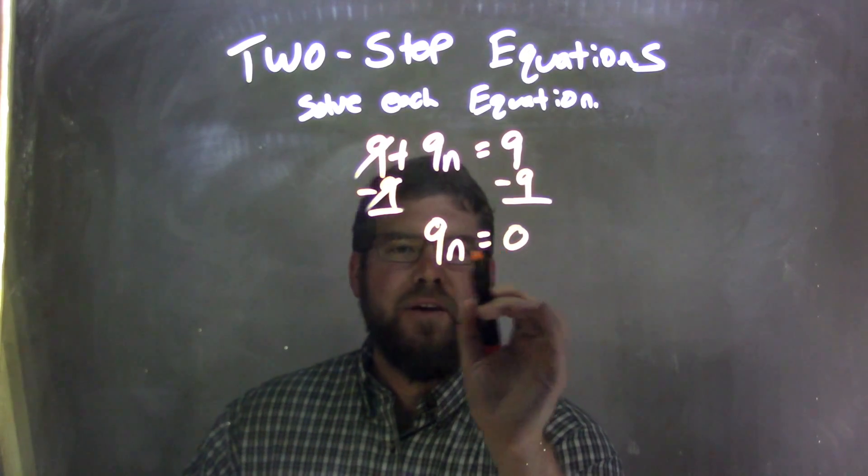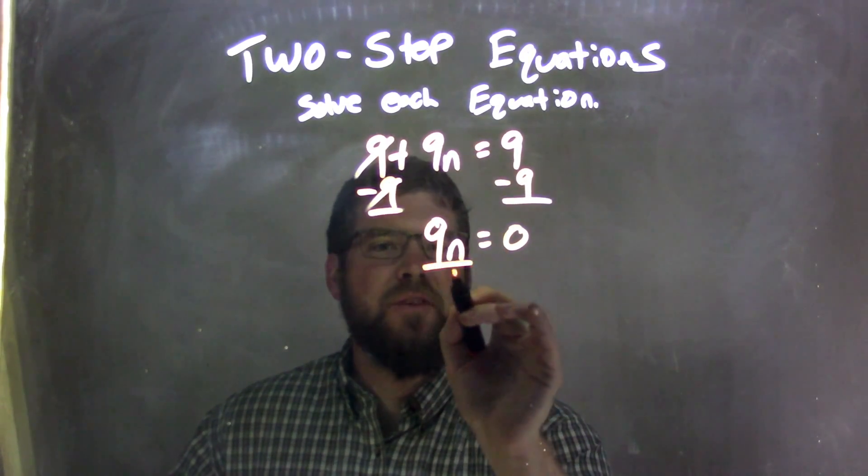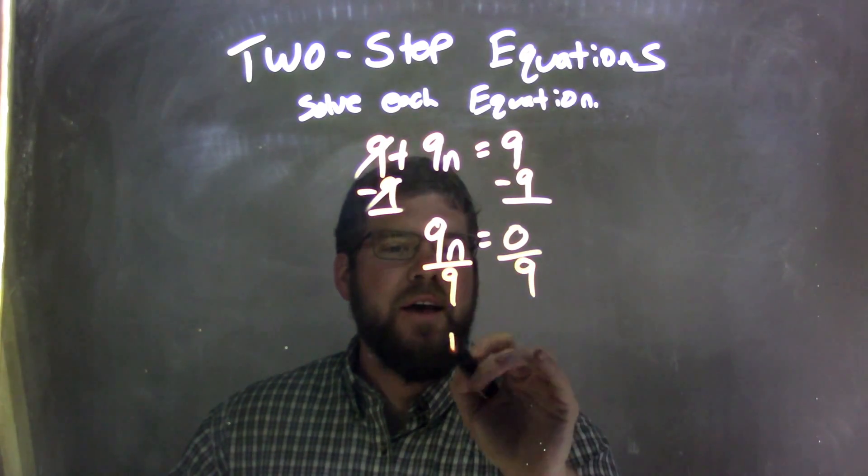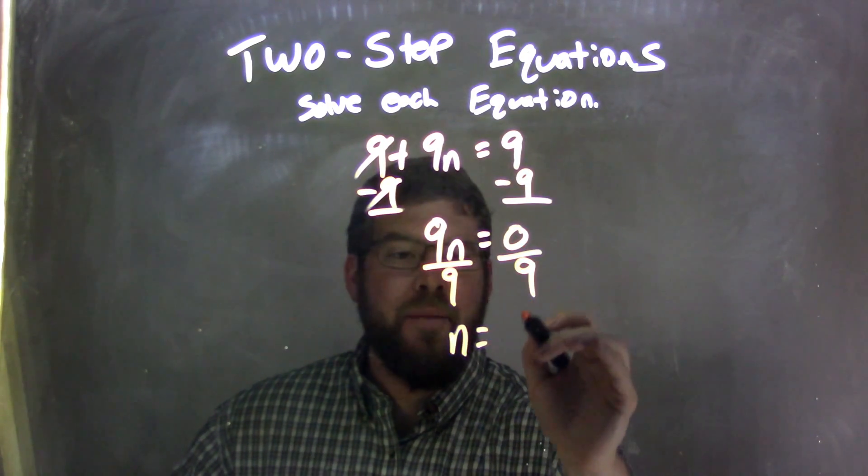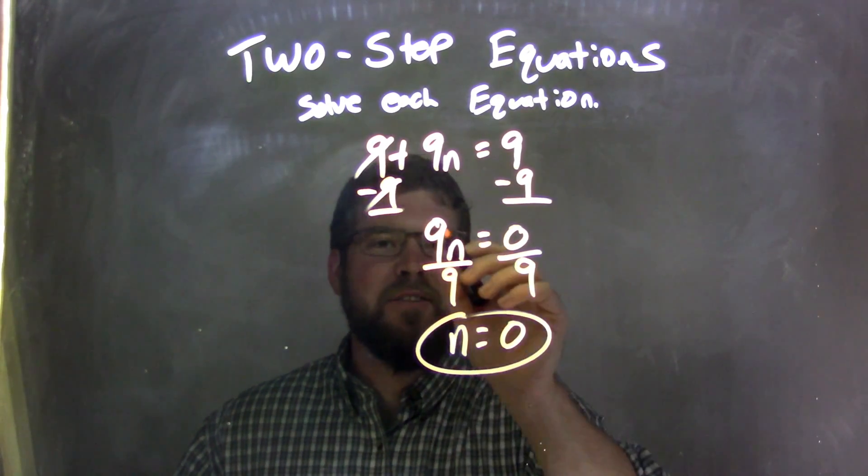9 times n equals 0. There's multiplication there. The opposite of multiplication is division. So, I'm going to divide by 9 on both sides. I have n equals 0 divided by 9, which is just 0. So, if n equals 0 now, that's just my final answer.